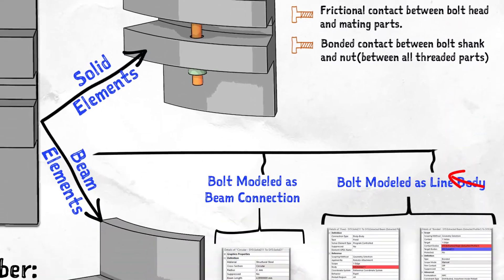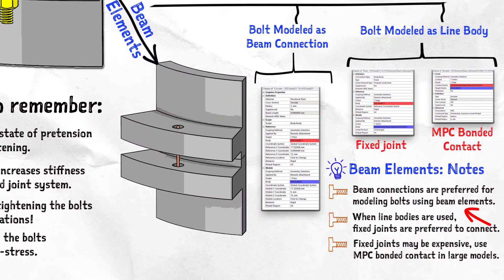Beam elements are not as expensive as solid elements and therefore they are very efficient in modeling bolts, especially when they are present in large numbers in assemblies. They do provide details about stresses developed in and around the bolt, but these results are not as accurate and detailed as solid elements.